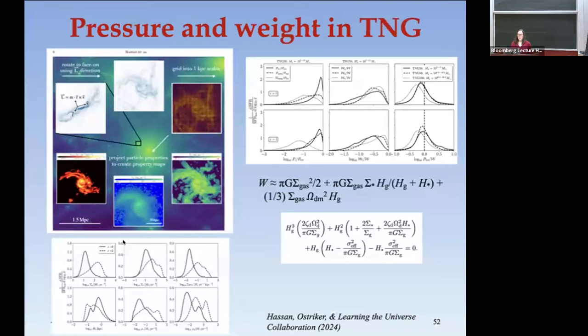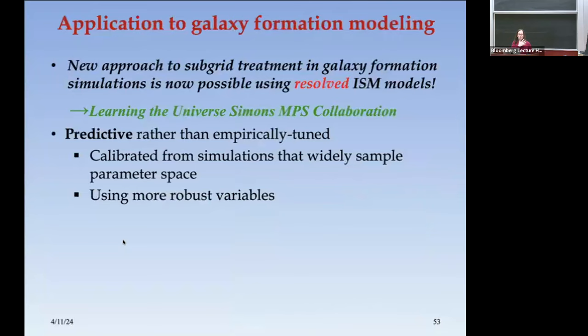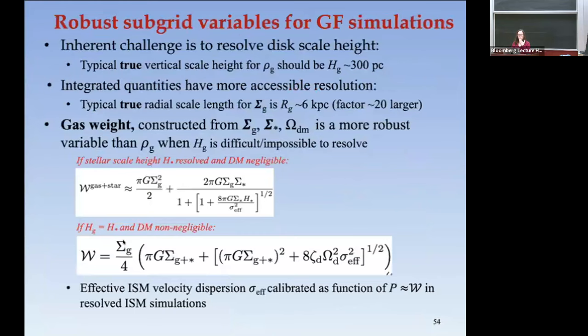You have to rescale the coefficients to match. This shows the ratio of pressure to weight: TNG50 matches reasonably well, but TNG100 has distinctly lower pressure than weight, and TNG300 would look even worse. However, you can make a better estimate by using more robust variables — while it's very challenging to resolve the true vertical scale height in big-box simulations, it's much easier to resolve the radial scale length, and from the surface density you can make a good estimate of the weight.